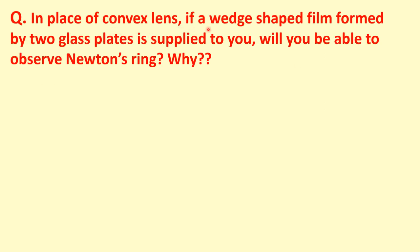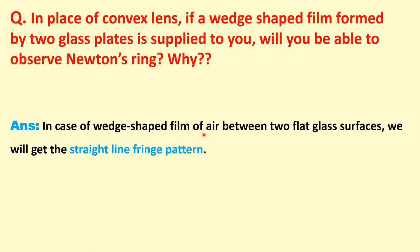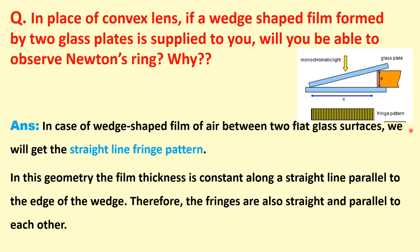If instead of the convex lens the film is formed by two flat glass plates, will you see Newton's rings and why? In the case of a wedge-shaped film between two flat surfaces, we will see a fringe pattern of straight lines. This is because the film thickness is constant along a straight line parallel to the axis of the wedge, and therefore the fringes are straight and parallel to each other.